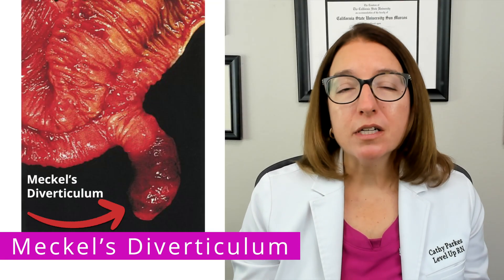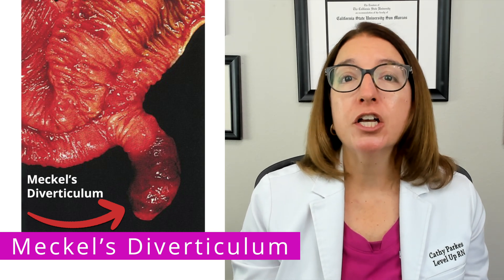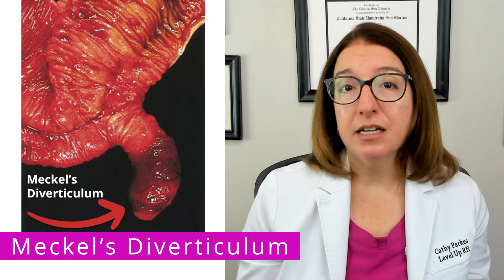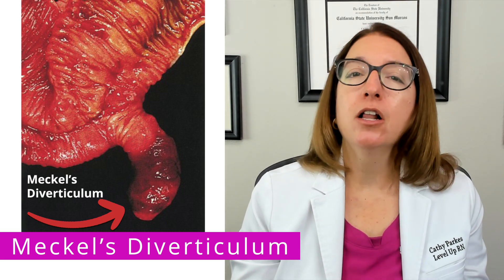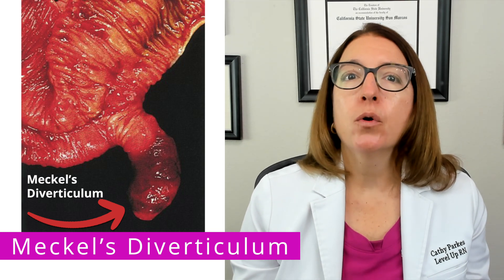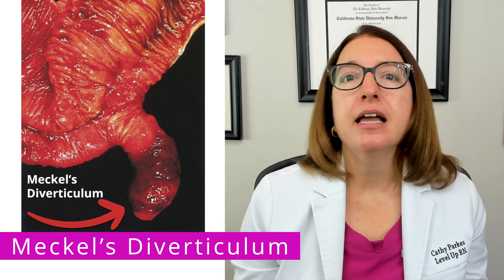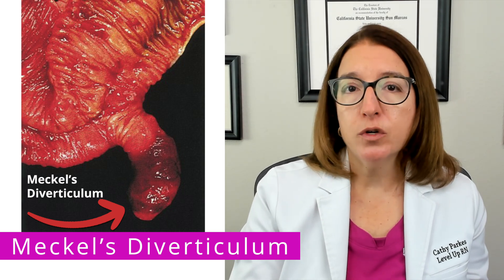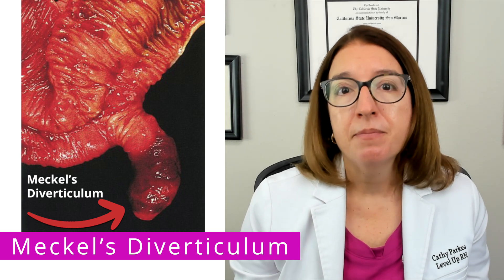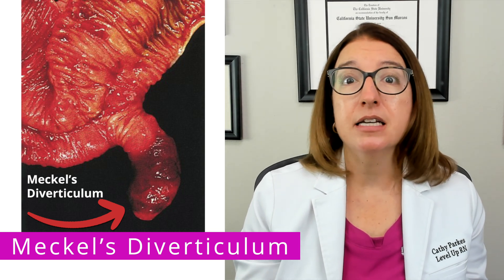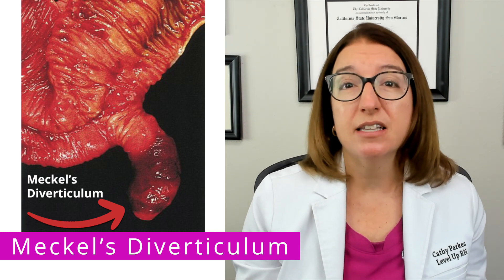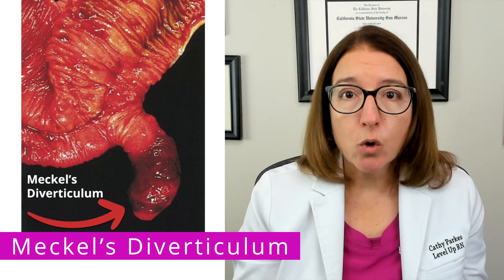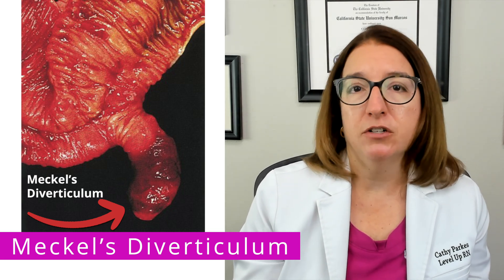Meckel's Diverticulum is the most common gastrointestinal congenital defect. With this defect, we have a diverticulum or pouch in the lower part of the small intestine. Early in pregnancy, there is a duct that provides nutrition to the developing embryo from the yolk sac until the placenta develops. Normally, this duct is absorbed by the fetus around seven weeks of gestation and disappears. When this duct is not absorbed, a Meckel's Diverticulum forms.